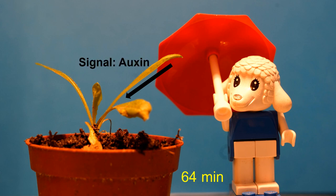And we already know the signal. It is the plant hormone auxin, one of the most important signaling molecules in plants.